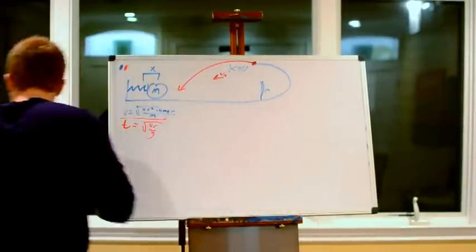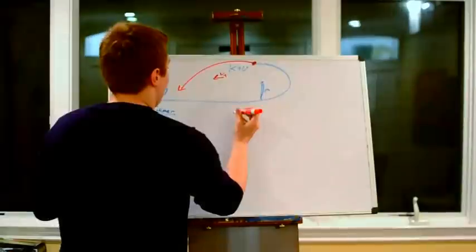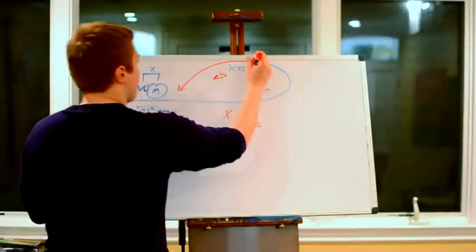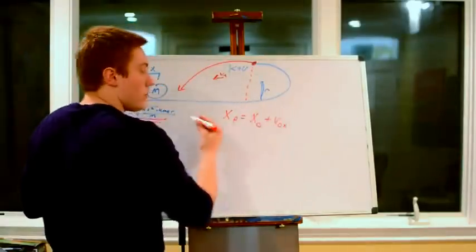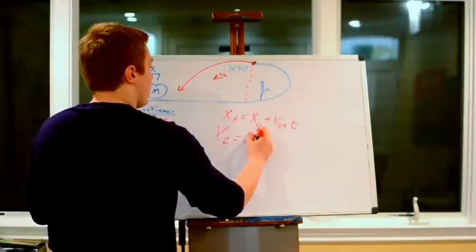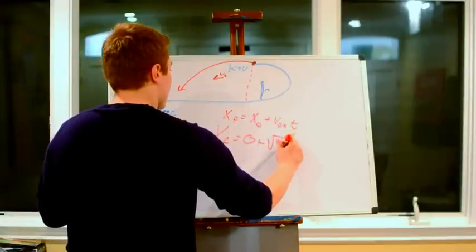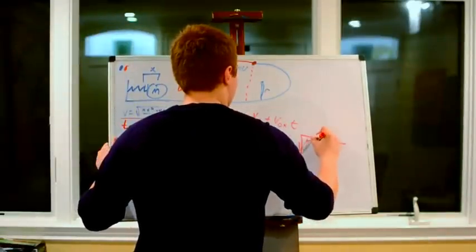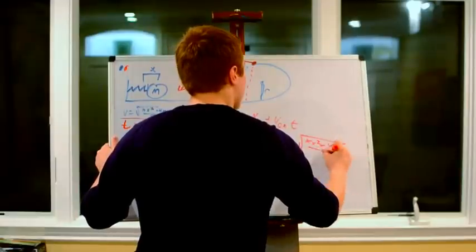For the x direction, equations don't involve acceleration because there's no acceleration in the x direction. Our final x, which is our range, equals initial x, which we define as zero, plus initial velocity, which is constant throughout, times time. So this is our variable we're looking for: zero plus the square root of 4r over g times the square root of (kx squared minus 4mgr) all over m.